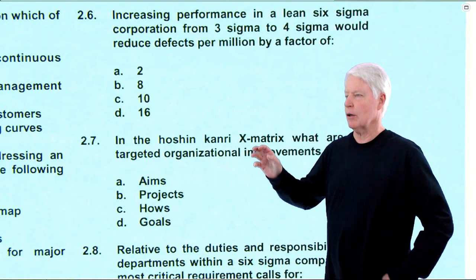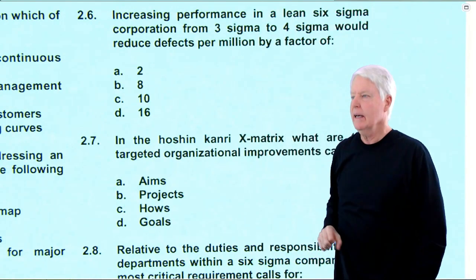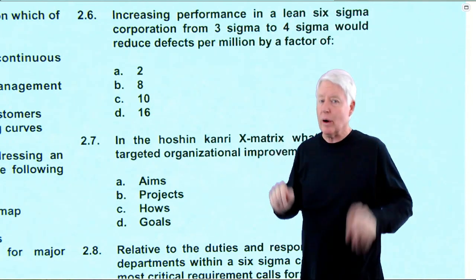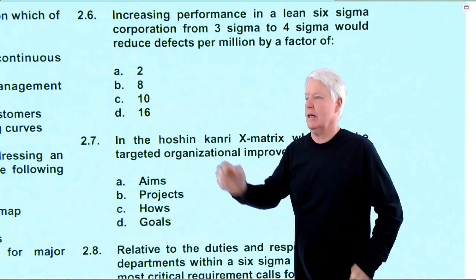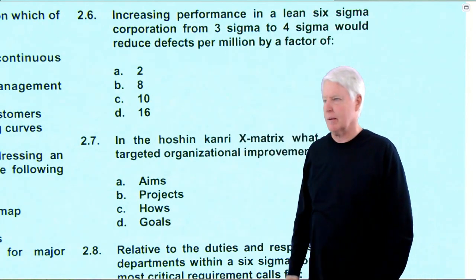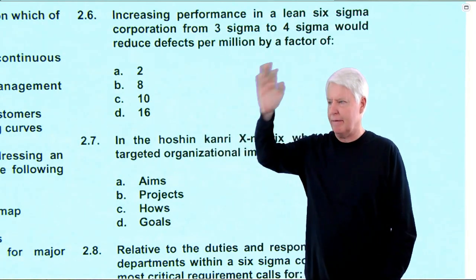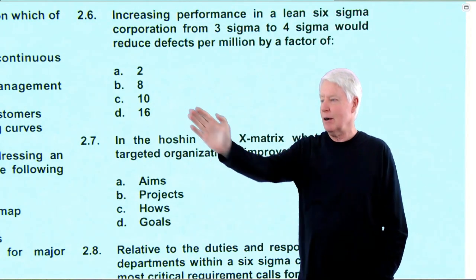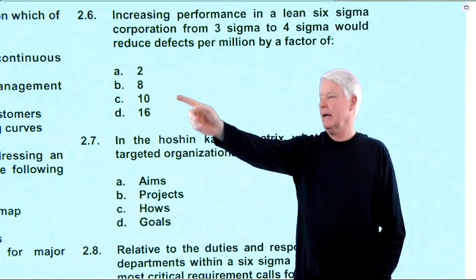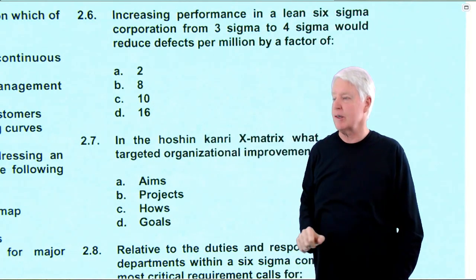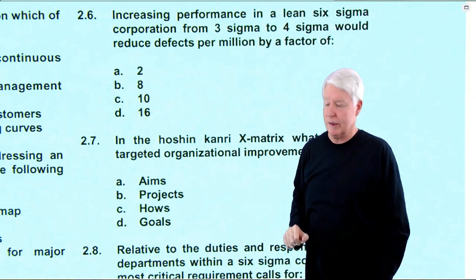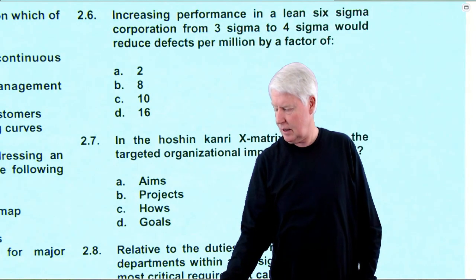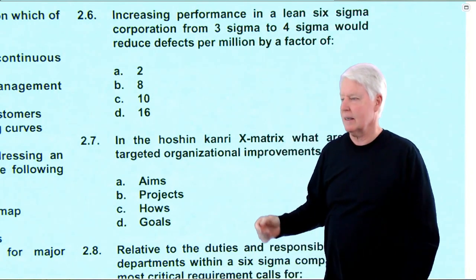Back at Question 6: Increasing performance in a Lean Six Sigma Corporation, from 3 Sigma to 4 Sigma, would reduce defects per million by a factor of what? We calculated 10.7-something. There's no 11 as an option, so 10 is the closest. The answer is C, and that is correct.